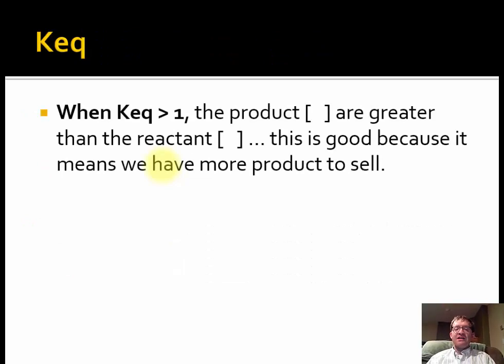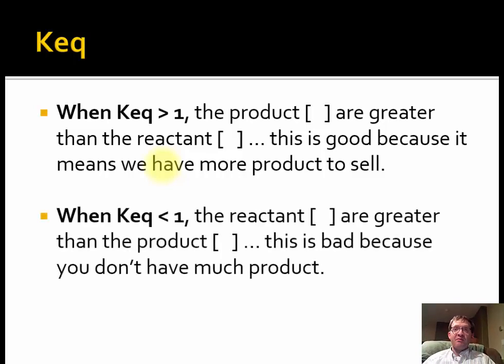In the end, when we calculate KEQ, any time KEQ comes out greater than one, it means that the products are greater than the reactants, or the product concentrations are greater than the reactant concentrations. This is good because we want products to be made in a reaction because they're probably what we're trying to sell, or we're going to use our product in the next stage of our process and make something that we're going to sell. If I run a company, I want you to make lots and lots of product. When KEQ is high, which is to say greater than one, that means the product numbers on the top are bigger and my reactant numbers on the bottom are smaller. That means I have more product and that means more money for me if I am a business owner.